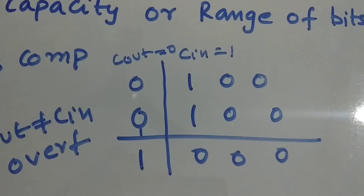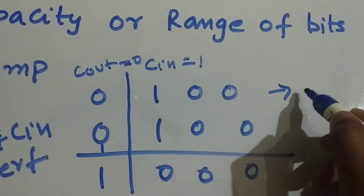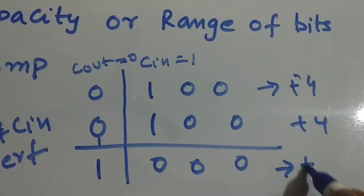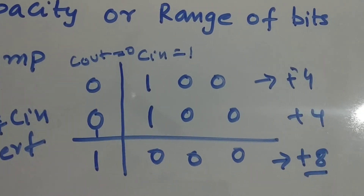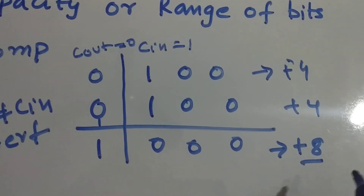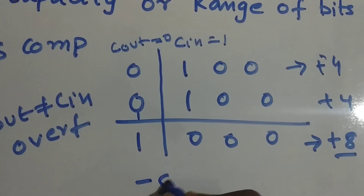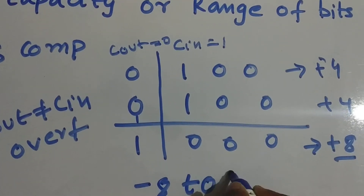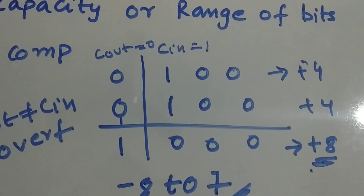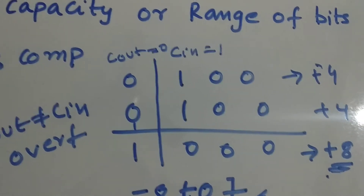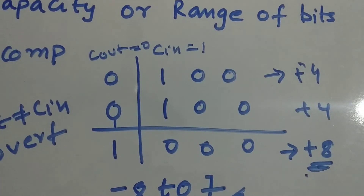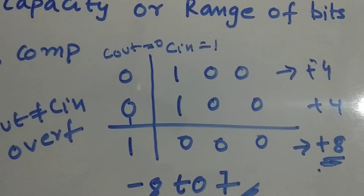Why is this an overflow? The first number is positive four and the second is positive four, so the actual result should be positive eight. But positive eight cannot be represented in four-bit two's complement — the range is minus eight to plus seven. Plus eight exceeds that range, which is why we get an overflow.